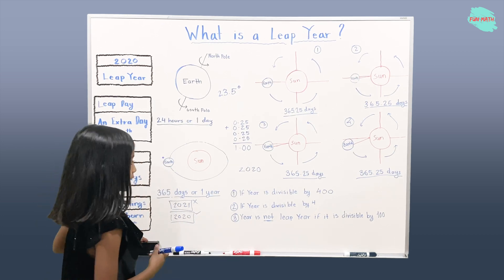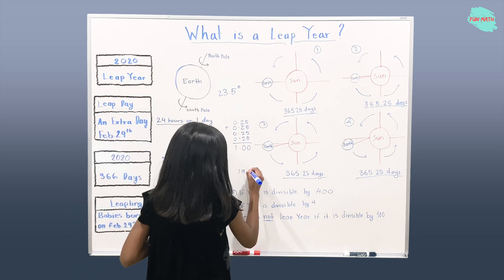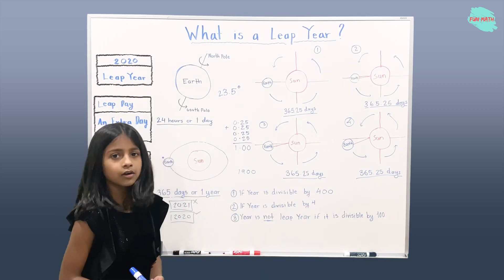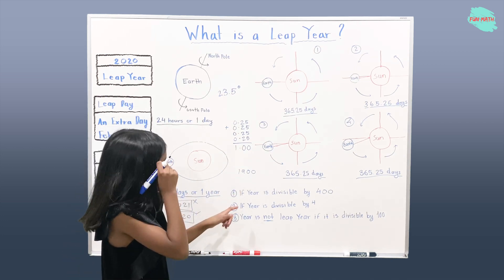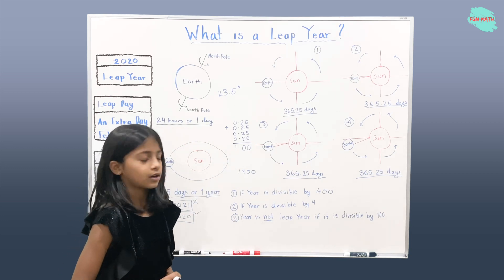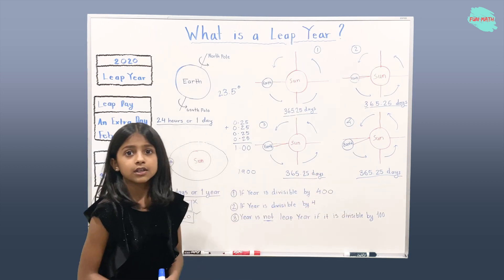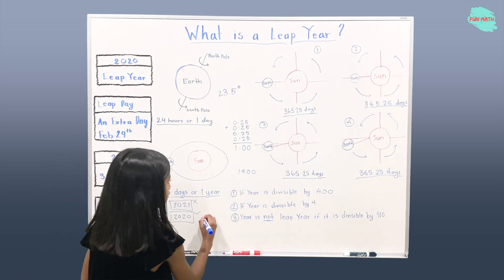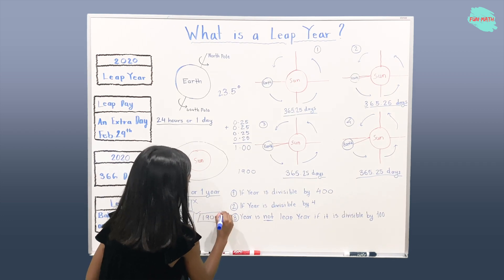Now let's take one last example — 1900. Is 1900 divisible by 400? No, it will give us a remainder. Is 1900 divisible by 100? Yes. But that means it's not a leap year. So 1900 is not a leap year.